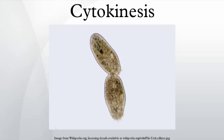Abscission depends on septin filaments beneath the cleavage furrow, which provide a structural basis to ensure the completion of cytokinesis. The position at which the contractile ring assembles is dictated by the mitotic spindle. This seems to depend upon the GTPase Rho-A, which influences several downstream effectors to promote myosin activation and actin filament assembly at a particular region of the cell cortex.